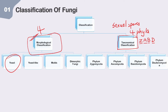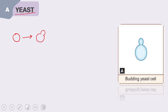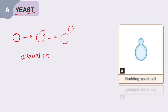Starting with the first morphological category — yeast. Yeast are round to oval cells. When they reproduce, they produce a small bud — a small outpouching or protuberance — which grows, increases in size, and ultimately gets separated from the parent cell. This entire process is asexual and is called budding.